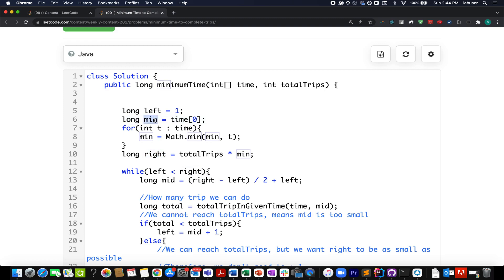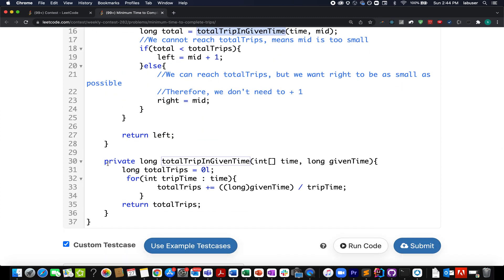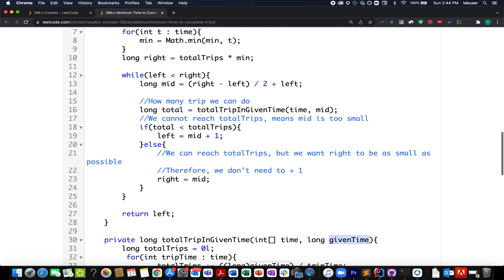Here I have created two pointers, left and right. Left points to 1, and for calculating the right value, I have figured out the minimum time that is present in my entire time array and I multiply it with total trips that I have, so I get the right one, I get the left bound. What do I do next? I find out the mid value of left and right, and then using this mid value, I calculate the total number of trips that can be completed. I have created a helper method for this which is iterating over the time array and giving us the total trips that can be completed in this given time.